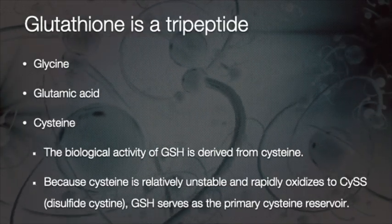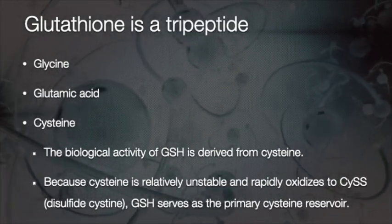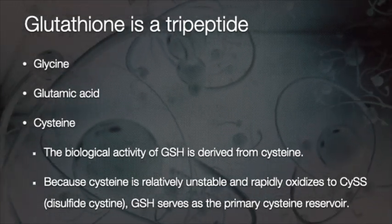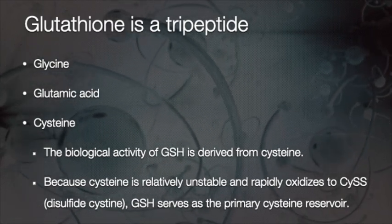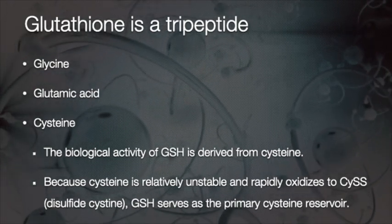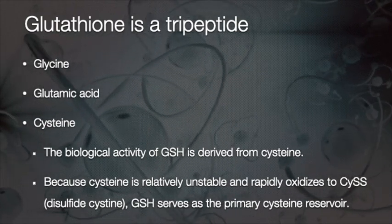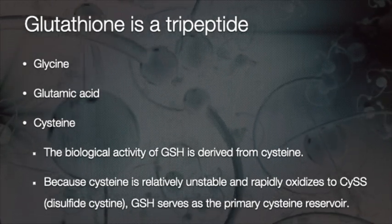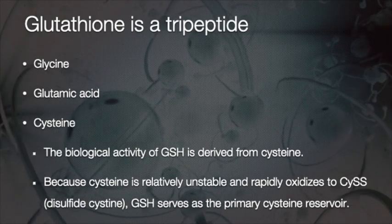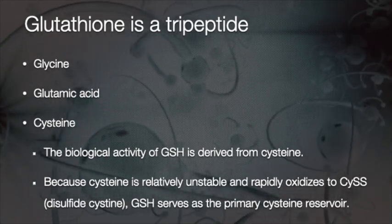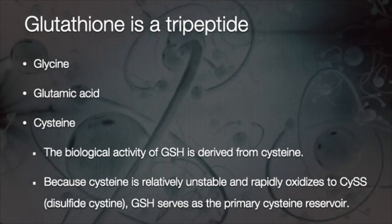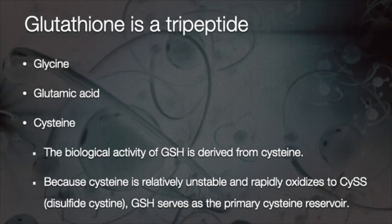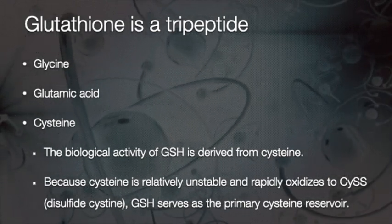So what is glutathione? Glutathione is a tripeptide — three amino acids attached to each other. These three amino acids are glycine, glutamic acid, and cysteine. The biological activity of glutathione is derived from the amino acid cysteine, because cysteine is relatively unstable and rapidly oxidizes to an oxidized form called cystine (disulfide cysteine). Glutathione therefore serves as the primary cysteine reservoir.